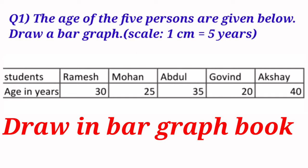Student names are given: Ramesh, Mohan, Abdul, Govind and Akshay. And their age in years are 30, 25, 35, 20 and 40 years. Hello student.